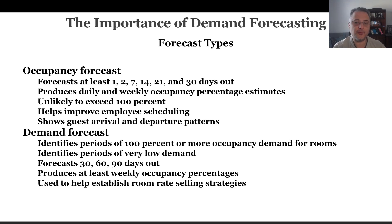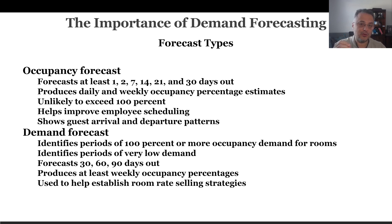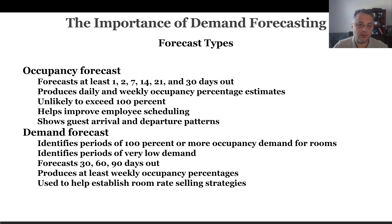You also need to do demand forecasting — identify periods of 100% or more occupancy demand. It is almost impossible to get right always, but you should be as close as possible. You should also identify periods of very low demand. If you can, do forecasting 30, 60, 90 days out, incorporating all the things we talked about including events and other factors. Produce at least weekly occupancy percentages to help establish room rate selling strategies.